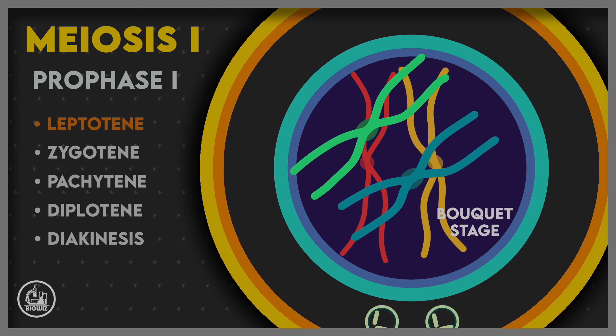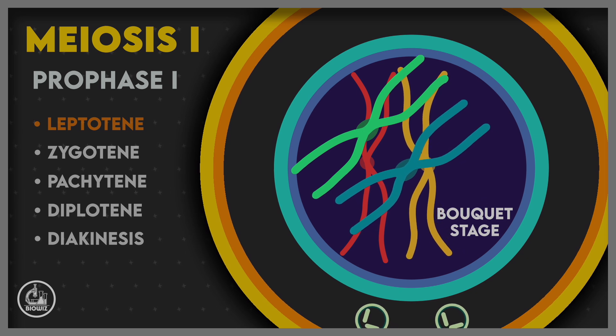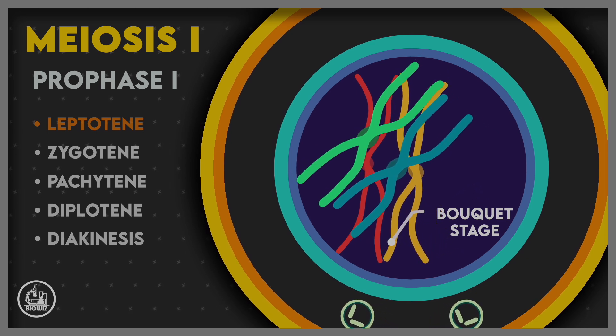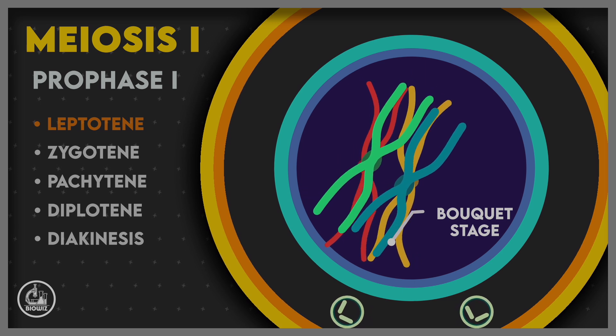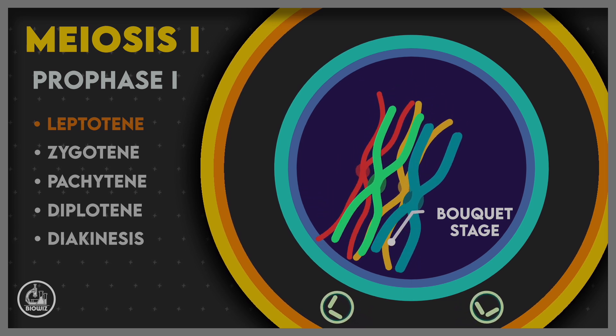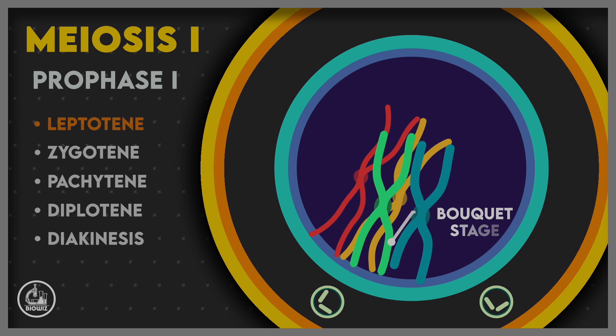During leptotene, all the chromosomes are attached to the nuclear lamina from one end. This results in appearance of a bouquet-like structure, and hence leptotene is also called the bouquet stage.